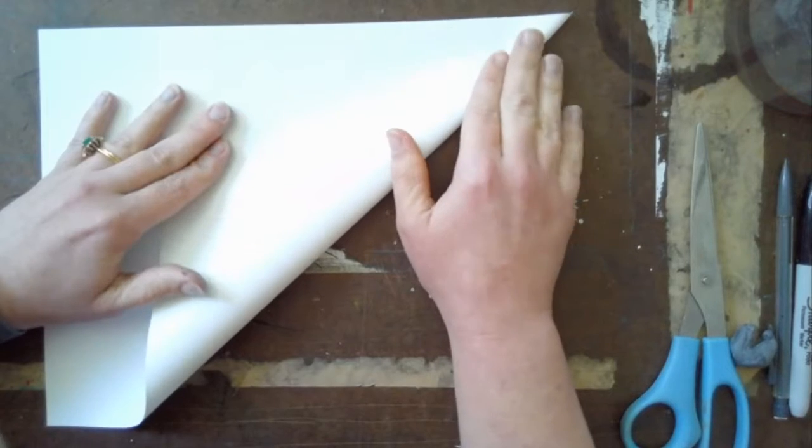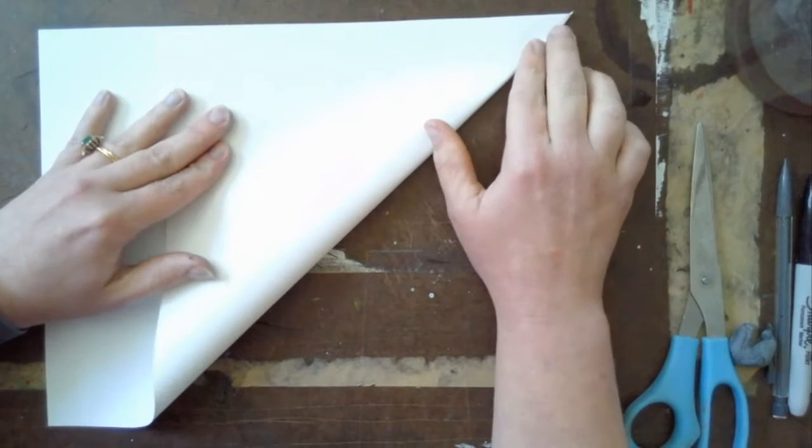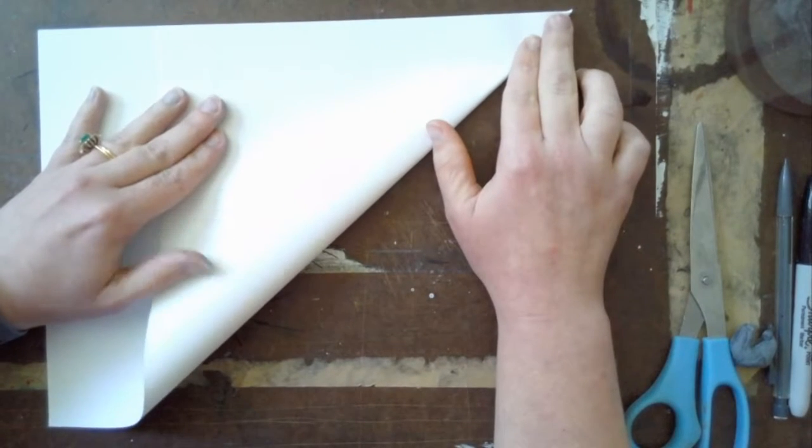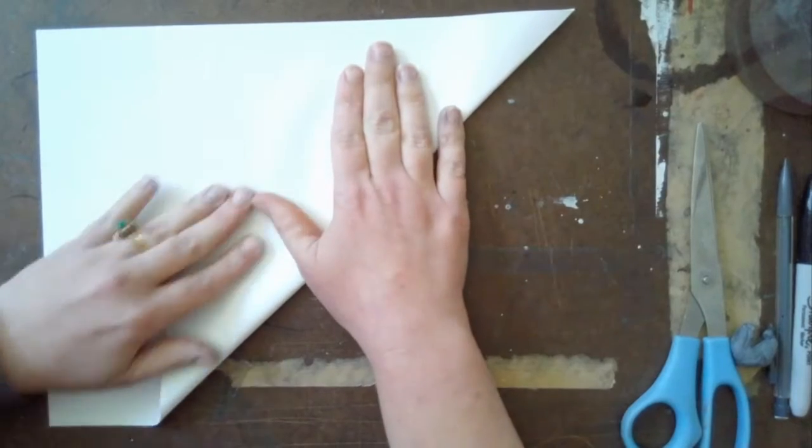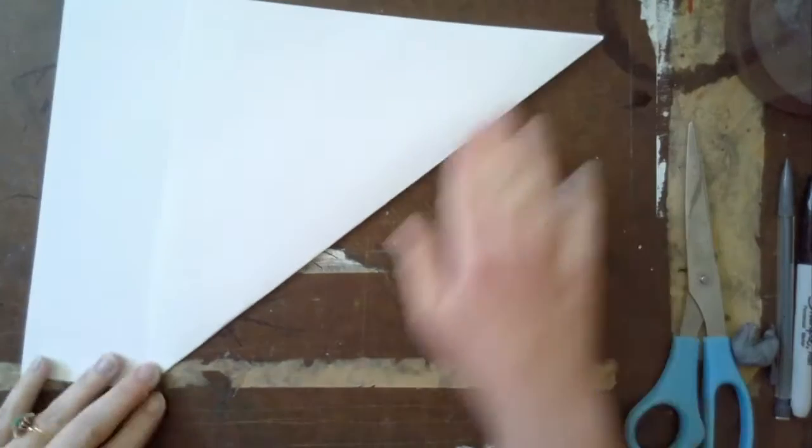I'll make a point, and then when I flatten that crease out, that extra paper on the side, that rectangle, I'm just going to trim off.